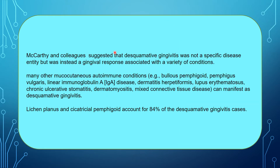McCarthy and colleagues suggested that desquamative gingivitis was not a specific disease in itself, but was instead a gingival response associated with a variety of conditions. Many mucocutaneous autoimmune conditions such as bullous pemphigoid, pemphigoid vulgaris, and linear immunoglobulin disease can manifest as desquamative gingivitis. Lichen planus and cicatricial pemphigoid account for about 84% of desquamative gingivitis cases.